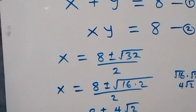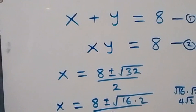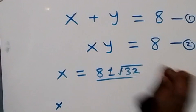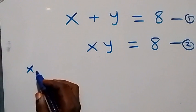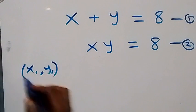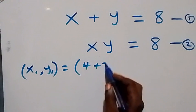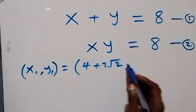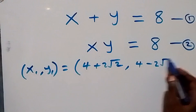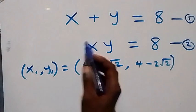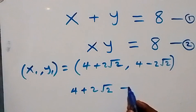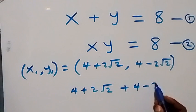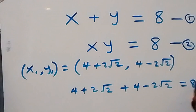For equation 1, x plus y equals 8. Testing with the first set of solutions (x1, y1) = (4 plus 2 root 2, 4 minus 2 root 2): substituting gives (4 plus 2 root 2) plus (4 minus 2 root 2) equals 8. The 2 root 2 terms cancel, and 4 plus 4 equals 8, which confirms it satisfies equation 1.